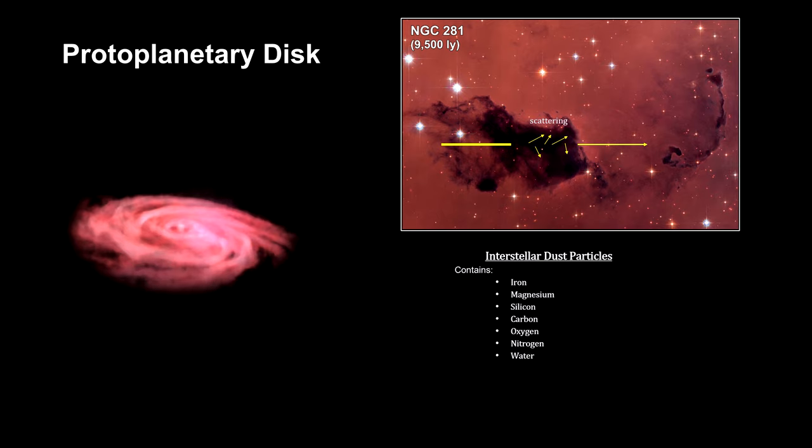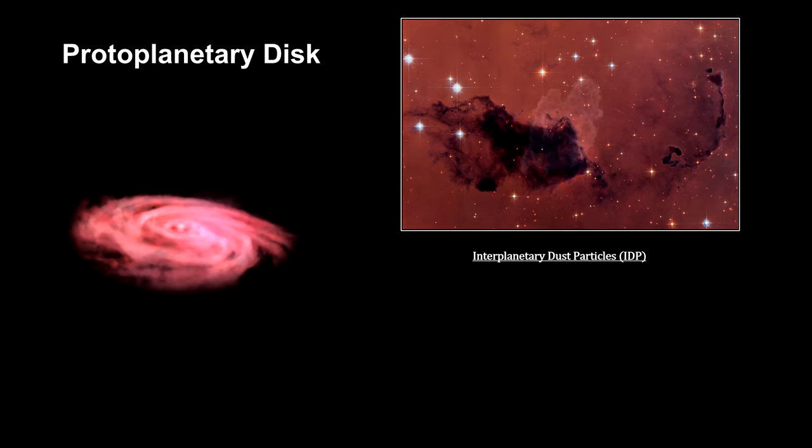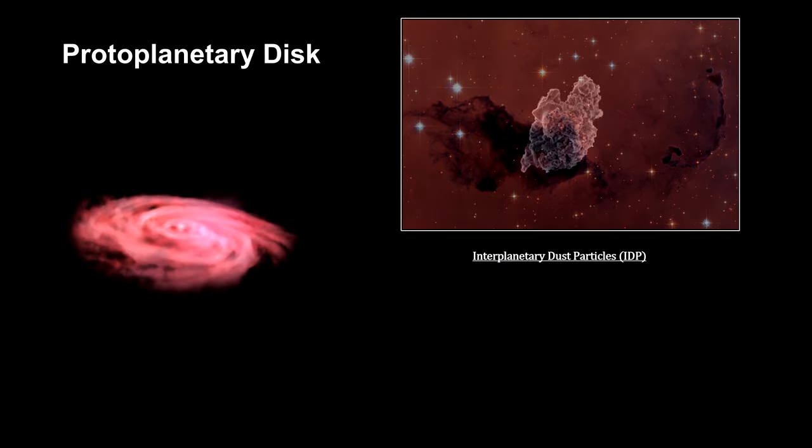The original dust grains in the cloud are no longer available for direct observation. But to this day, there are similar objects in our solar system called interplanetary dust particles.